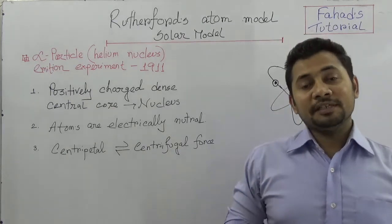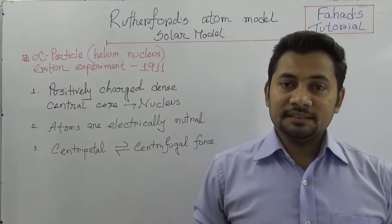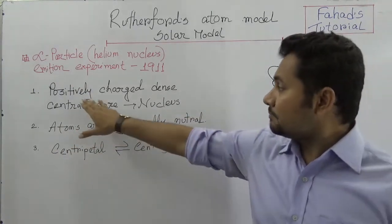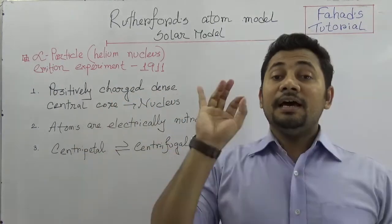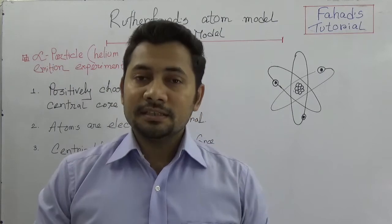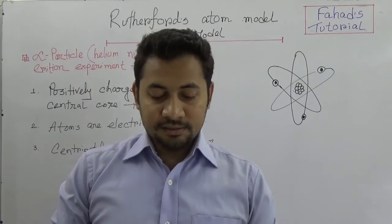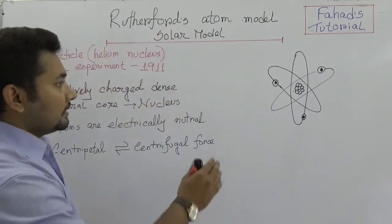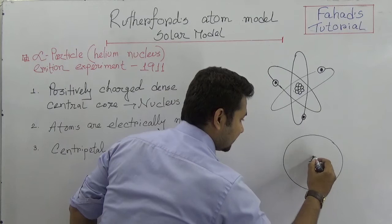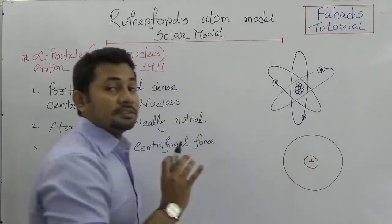In 1911, Rutherford experimented with alpha particles — which is actually the helium nucleus emissions experiment — and from that he stated some statements. The first key point is that there is a positively charged dense central core known as the nucleus. In the center of the atom there is this positively charged dense central core, and that is called the nucleus of the atom.